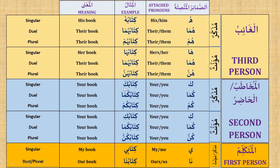Ka — kitabuka, your book (singular); kuma — kitabukuma, your book (dual); kum — kitabukum, your book (plural). These are second person mudhakkar, masculine. Ki — kitabuki, your book (singular); kuma — kitabukuma, your book (dual); kunna — kitabukunna, your book (plural). These are second person mu'annath, feminine. Ya — kitabi, my book (singular); na — kitabuna, our book (dual or plural). These are for both masculine and feminine.